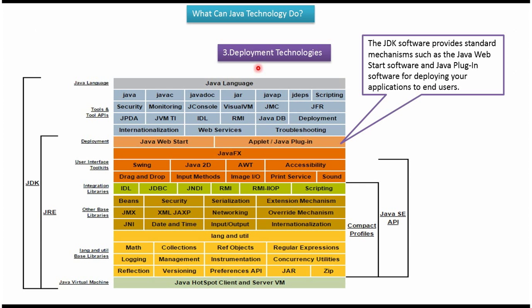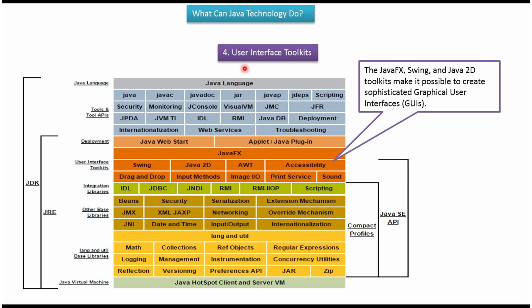The third feature is deployment technologies. JDK software provides Java Web Start and applet or Java plugin for deploying your application to end users. The fourth feature is user interface toolkits. In user interface toolkits you can see JavaFX, Swing, Java2D, AWT, Image I/O, etc. Using these we can create graphical user interfaces.